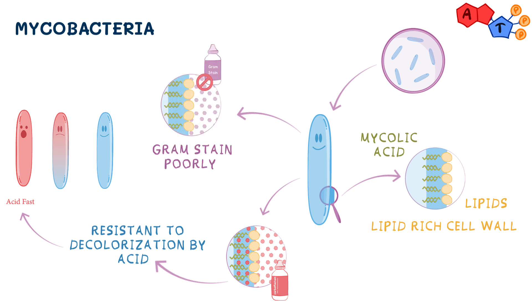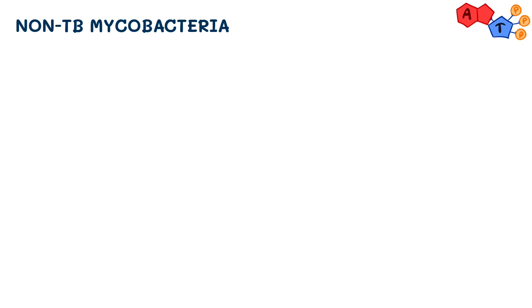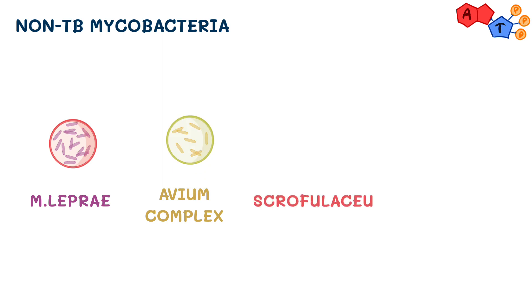What do we use to stain them then? We use something called Ziehl-Neelsen stain. This stain is used to detect mycobacteria. Now, on to today's topic: non-tuberculosis mycobacterium species. This video will mainly focus on Mycobacterium leprae, avium complex, scrofulaceum, and marinum.